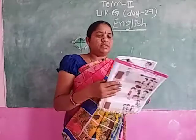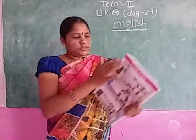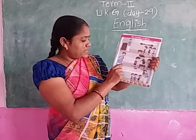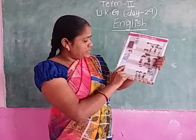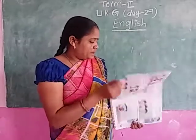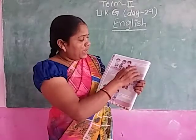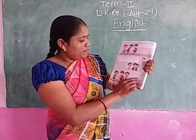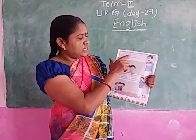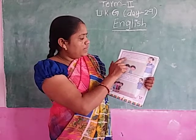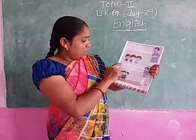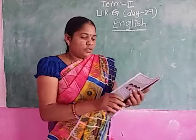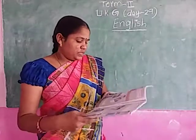Sham opened one of the bundles and gave separate sticks to each son. They broke the sticks easily. Sham said: 'See sons, when these sticks were together, you could not break them. But when they were separated, you could easily break them.' His sons said: 'Yes father, we have learned this lesson today. We shall always be united. We shall not fight henceforth.'